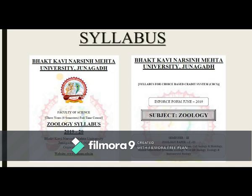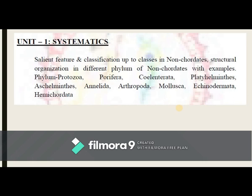Now we are discussing the syllabus given by Bhakta Kavi Narsinh Mehta University for Semester 3 students. In Semester 3, for S5BSc Zoology, Paper Z03, you will study non-chordate animals including systematics, forms and functions, cell biology, histology, animal behavior, economic zoology, wildlife biology, ecology, and instrumentation biology.